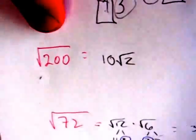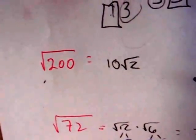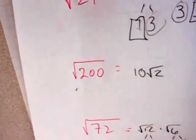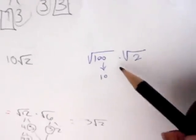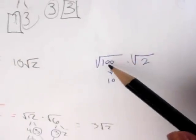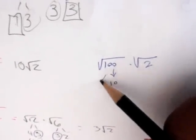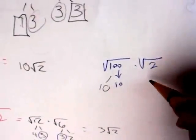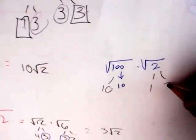200. Ooh. What do we do? Now we know that 100 times 2, which is over here, equals 200. But the square root of 100 is 10 times 10. And 2 is 1 times 2.